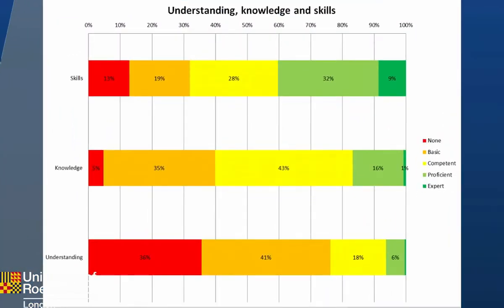Not entirely digitally illiterate, but a patchy distribution of skills. This year we introduced questions about understanding as well as skills. Skills-wise they're actually not bad — two-thirds competent, proficient, or expert. But when it comes to understanding, fewer than a quarter are competent, proficient, or expert. And over a third of them ticked the box saying 'I have no understanding of ICT.' That's ever so slightly disturbing after twelve to fourteen years of compulsory education.